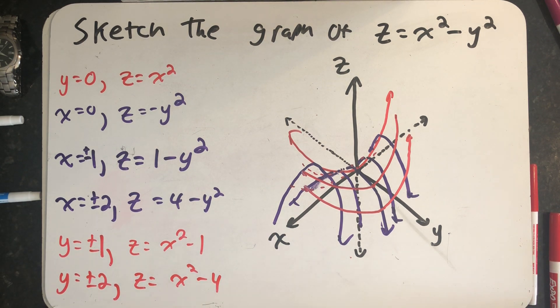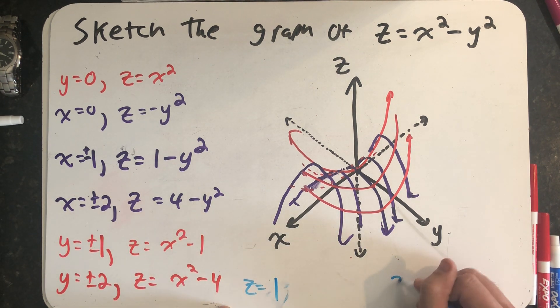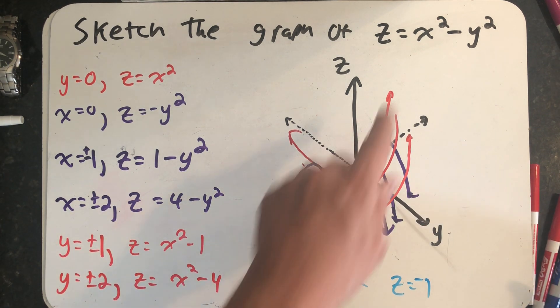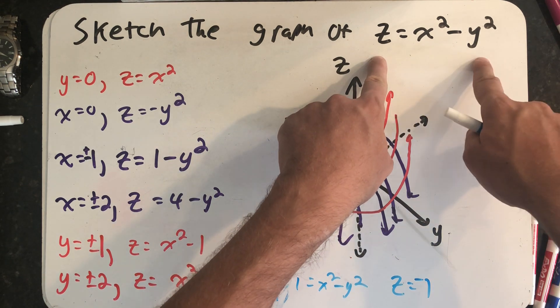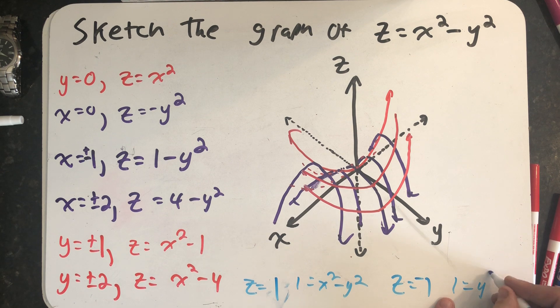Let's look at and see what happens when z is equal to, say, plus or minus one. Let's start with z equals one and then z equals minus one. Plugging in z equals one, I get one equals x squared minus y squared. Plugging in z equals minus one, I get minus one equals x squared minus y squared. So I could imagine flipping the signs around and getting one equals y squared minus x squared. These are equations of hyperbolas.